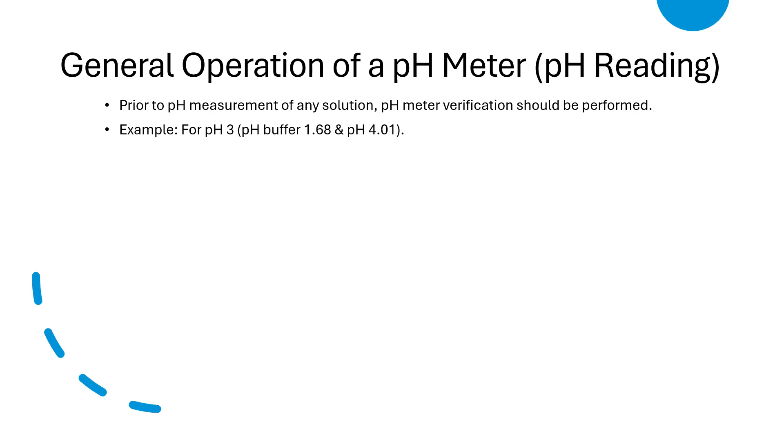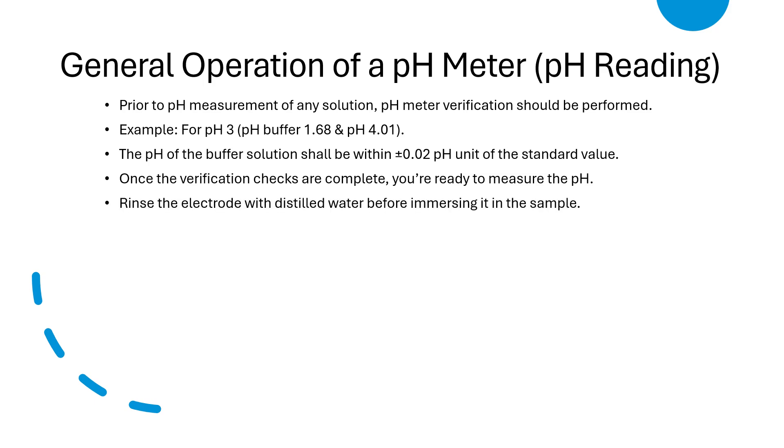The pH of the buffer solution shall be within plus or minus 0.02 pH units of the standard value. The stabilized value reading should be within plus or minus 0.02. Once the verification checks are complete, you are ready to measure the pH. Then rinse the electrode with distilled water before immersing it into the sample.